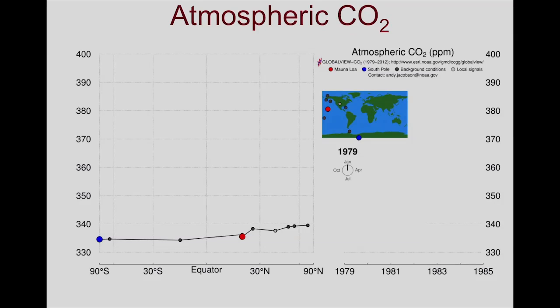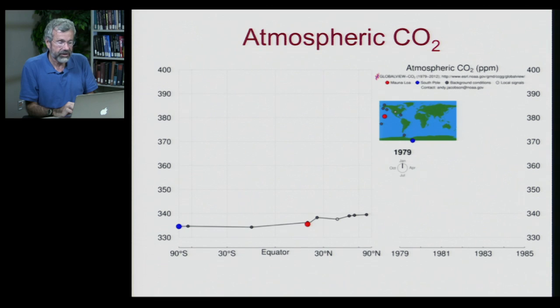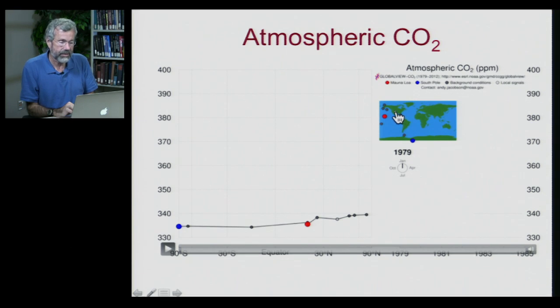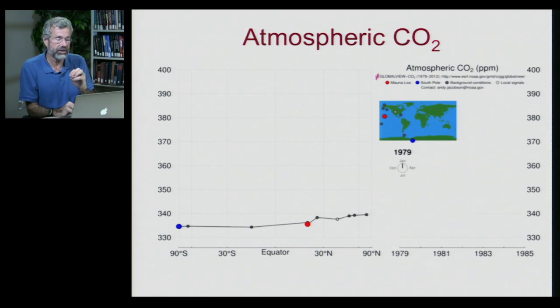Because less heat will be radiated out each night than normal, this could cause global warming. So what's been happening to CO2 around the world ever since the Industrial Revolution? This video has a lot going on. We have a map with a number of different monitoring sites where people have been measuring how much CO2 is in the air one month to the next since 1979.